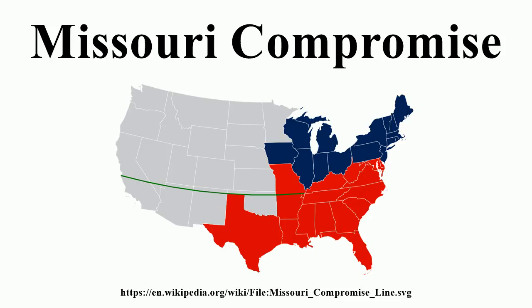The Senate passed a bill for the admission of Maine with an amendment enabling the people of Missouri to form a state constitution. Before the bill was returned to the House, a second amendment was adopted on the motion of Jesse B. Thomas of Illinois, excluding slavery from the Louisiana Territory north of the parallel 36 degrees 30 north, except within the limits of the proposed state of Missouri. The vote in the Senate was 24 for the compromise, to 20 against. The amendment passed in the Senate on February 17 and 18, 1820. The House then approved the Senate compromise amendment on a vote of 90 to 87, with those 87 votes coming from free state representatives opposed to slavery in the new state of Missouri. The House then approved the whole bill, 134 to 42.